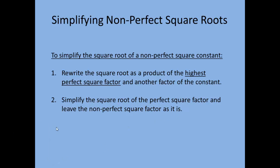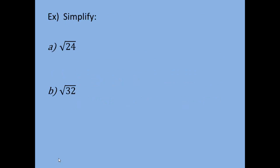Let's take a look at an example. For the square root of 24, 24 is not a perfect square — there is no number times itself that gives you 24. So what we want to do is rewrite this as the square root of its highest perfect square factor times the square root of whatever factor is left over. The highest perfect square that's a factor of 24 is 4.